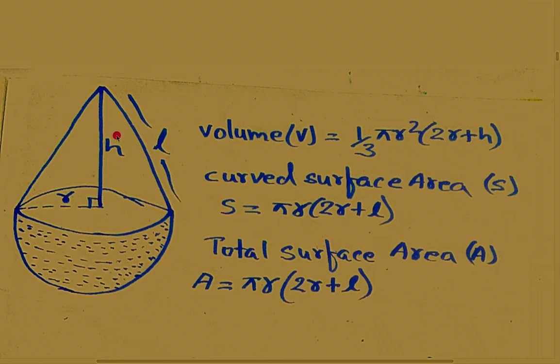Now here, h is the height of the cone, r is the radius of the cone, l is the slant height of this cone, and the lower one is the hemisphere.